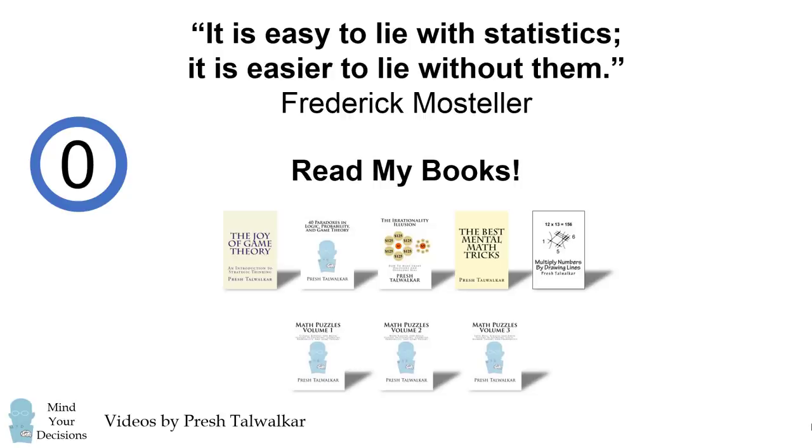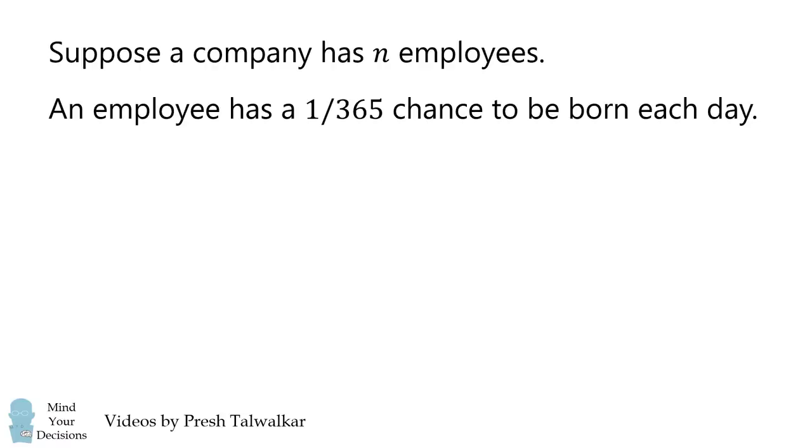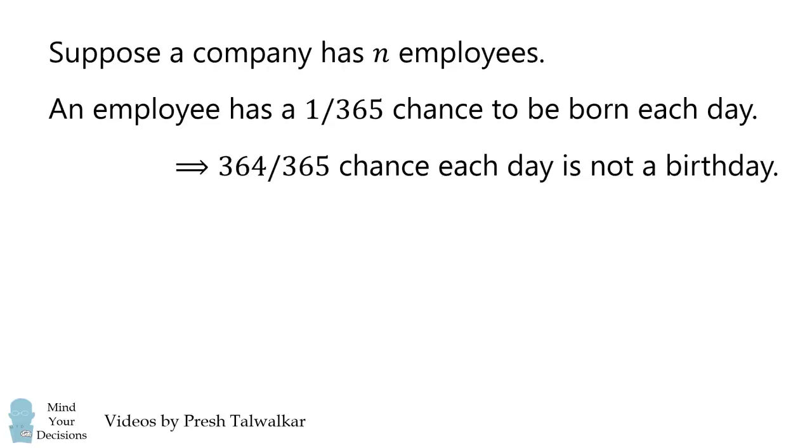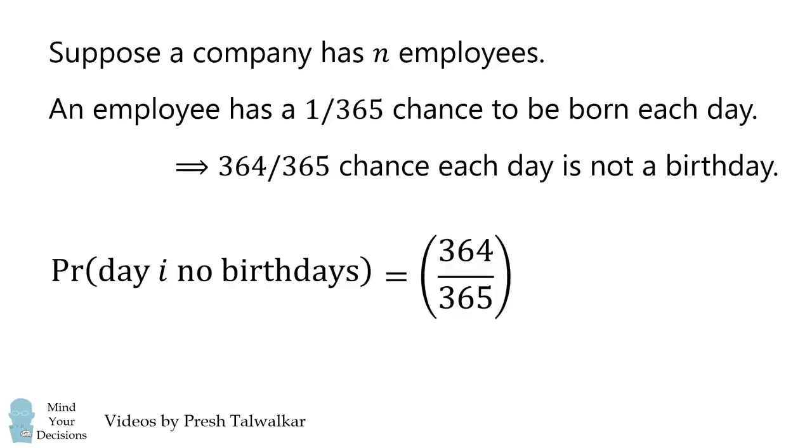Suppose a company has N employees. An employee has a 1 over 365 chance to be born each day. That means there is a 364 over 365 chance that each day is not a person's birthday. The probability that a given day has no birthdays will be the product of this for each of the N employees.